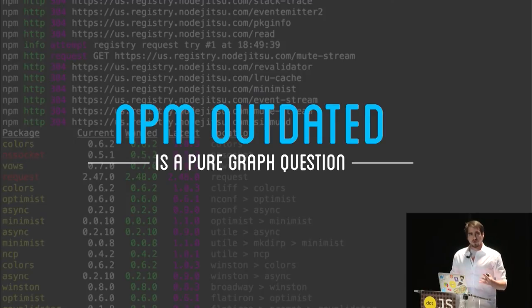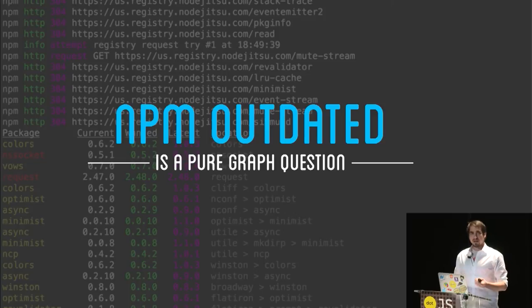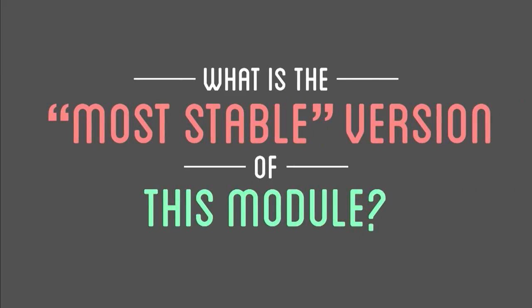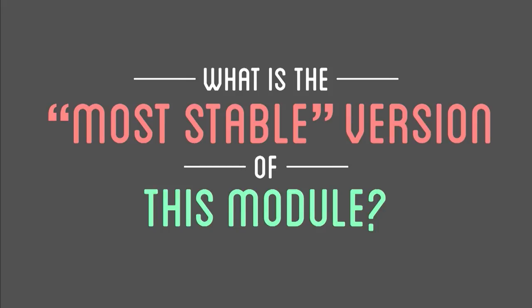There are a bunch of other interesting pure graph questions we can ask — things we can answer based just on the metadata itself. For example: people who depend on this module also depend on this other module. In the background you can see the co-dependency relationship graph we built as part of our research, all of which is already open source online. We can also ask: is this module used more in production or in development? What is the most stable version of this module? Stable here I define as the most depended-on version — anyone who has used Python 3 might relate.